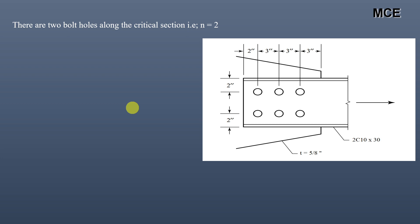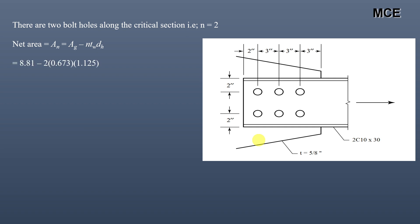We will calculate the strength for one section and then multiply by 2 to get the strength for the double channel section. There are two bolt holes along the critical section. The net area of one channel section equals gross area minus n times thickness of web times diameter of hole: 8.81 − 2(0.673)(1.125) = 7.3 in².